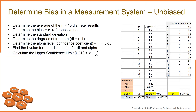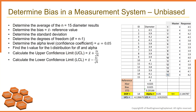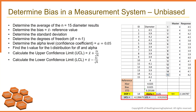Then calculate the upper and lower confidence limits. The upper confidence limit equals x-bar plus the t-value multiplied by the standard deviation divided by the square root of n. The lower confidence limit equals x-bar minus the t-value multiplied by the standard deviation divided by the square root of n. Since the confidence interval contains the reference value of 4 millimeters, the engineer concludes that there is no evidence of bias.